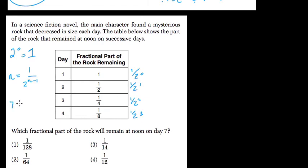So for the 7th day, it's 1, 7th day. Then we get 1 over 2 to the 7th minus 1, or 2 to the 6th, right? 2 to the 6th. And what's that?